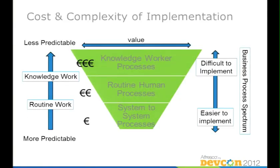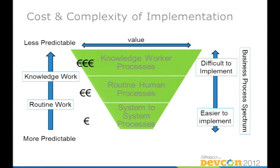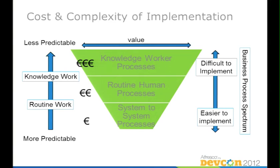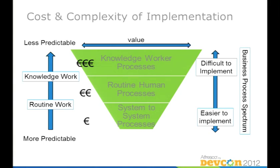Looking at the cost and complexity of implementation for certain things: system-to-system processes — like extracting data from a core system and shipping it to a data warehouse — are easy to understand. We know the requirements, we can automate them. System integration is always about automation. For example, in Alfresco, if you want to push content to the cloud, you just configure what gets replicated — after that, everything runs automatically. You implement it once, the cost is relatively small, and it works. These are essentially routine processes with a relatively small bill.